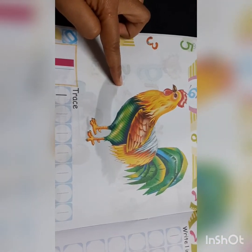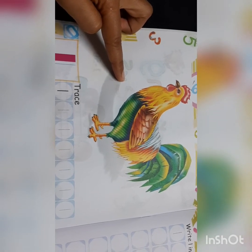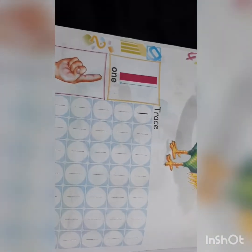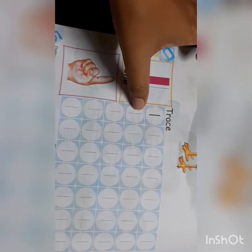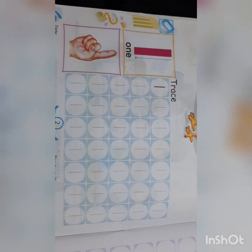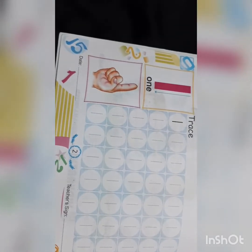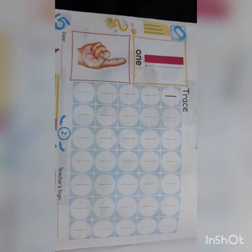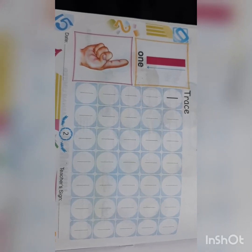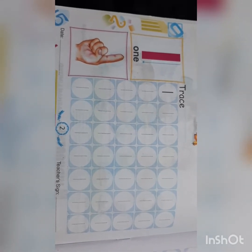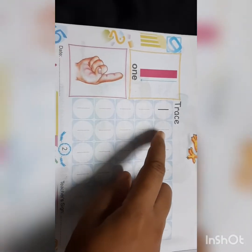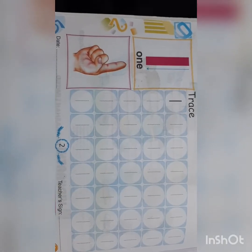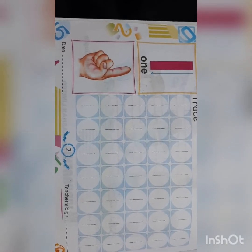It is a picture of a cock. How many cocks are there? There is one cock. So now we will trace number one in the book. A few children have already done it with pencil, so you can do it using crayons. Those who have not done it with pencil, you have to trace number one.